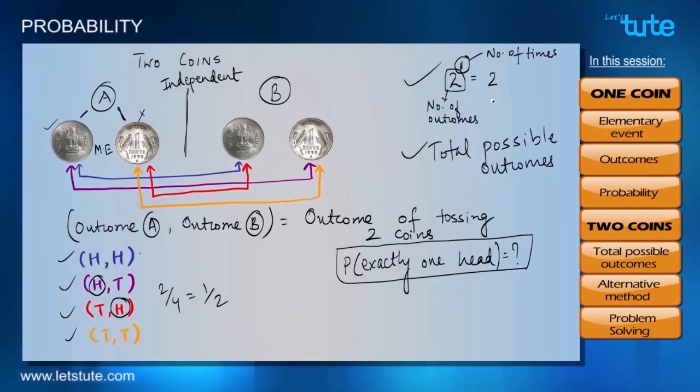We can certainly not take the outcome number 1 because there are 2 heads in the first outcome. Similarly, if we were to find the probability of exactly 1 tail instead, then we can see that we have 1 tail in outcome number 2 and in outcome number 3. So, the probability is again going to be 1 by 2.